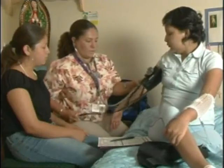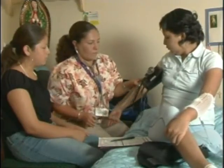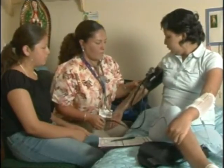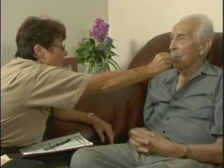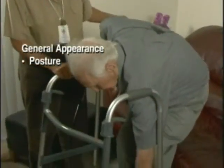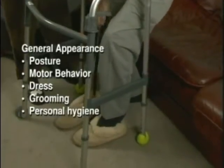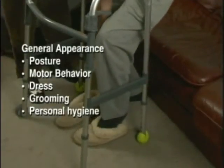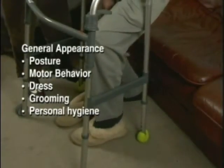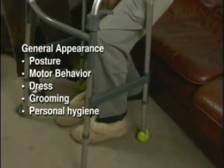The clinician may begin with vital signs — blood pressure, pulse, respirations, temperature — as a way to build the patient's trust and confidence. This gives the clinician an overview of posture, motor behavior, dress, grooming, and personal hygiene. Then the clinician starts a head-to-toe assessment. Inquire about any dizziness or headaches, and assess the head for swelling or tenderness, hair color, texture, and distribution.